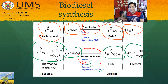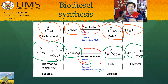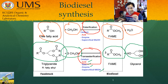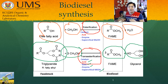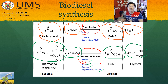Unlike esterification, transesterification can be catalyzed by acid, a base, enzyme, and supercritical methanol. However, free fatty acid and alcohol should not be reacted using a base catalyst, because instead of getting FAME you will get soap — that is a saponification reaction, as opposed to esterification.